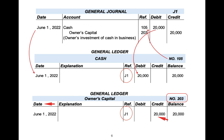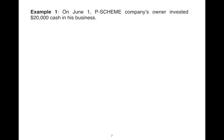Now let's move to more comprehensive examples where we will analyze the transaction, determine its effect on the accounting equation, and whether to make a debit or credit. Then we will prepare the journal entry and do the posting for each transaction using the T-account form. Finally, after we finish all examples, we will prepare the general journal and the general ledger.